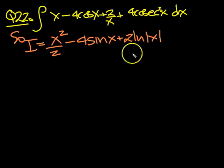Then you've got your 4 cosec squared. So it's 4 lots of, and then the integral of cosec squared is minus cot x, wasn't it? Plus a k at the end.